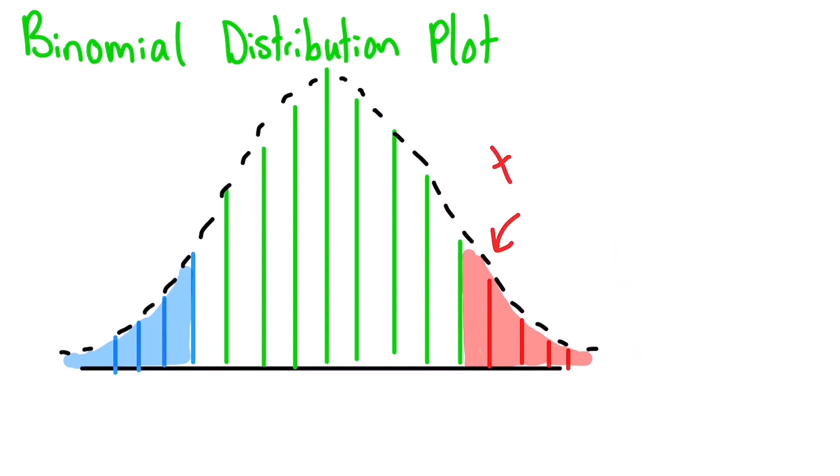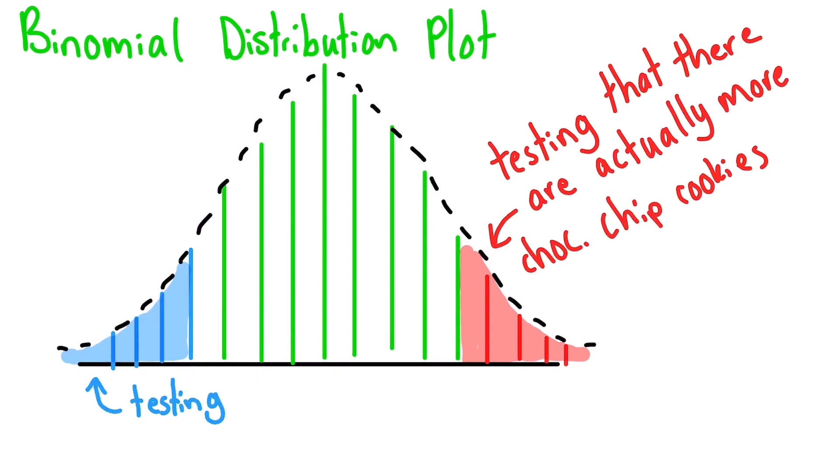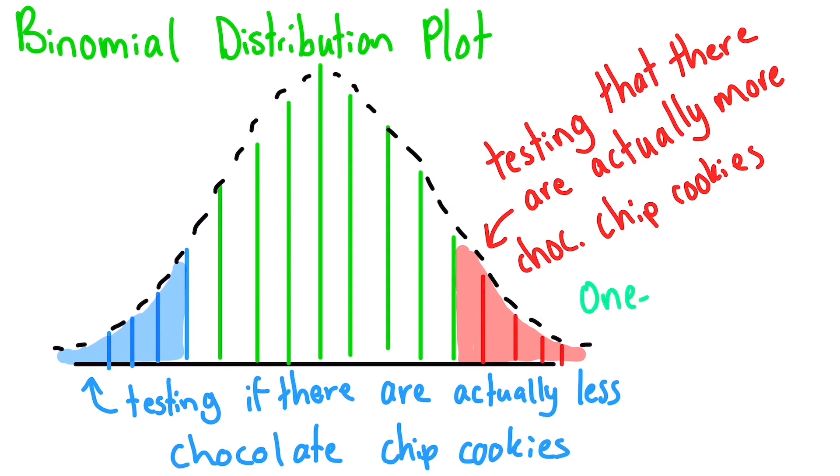For example, if we're expecting the amount of chocolate chip cookies to be larger than what was promised, we draw a critical region like this. If we think it's smaller, then we draw a critical region like this. These are called one-tailed tests.